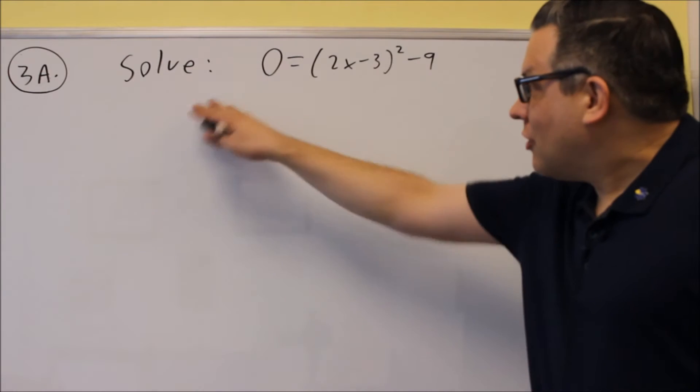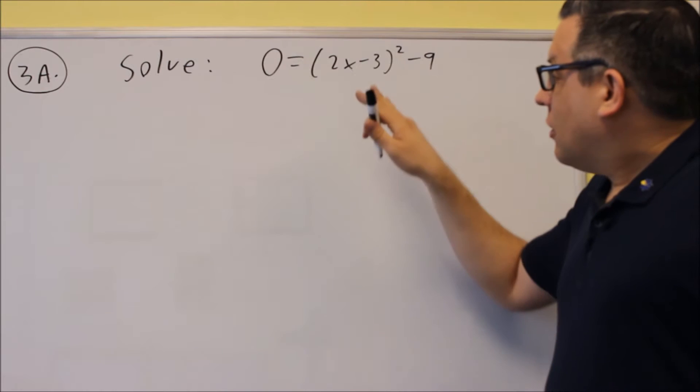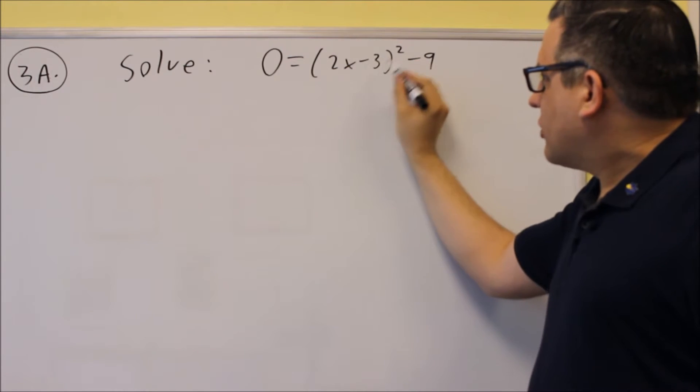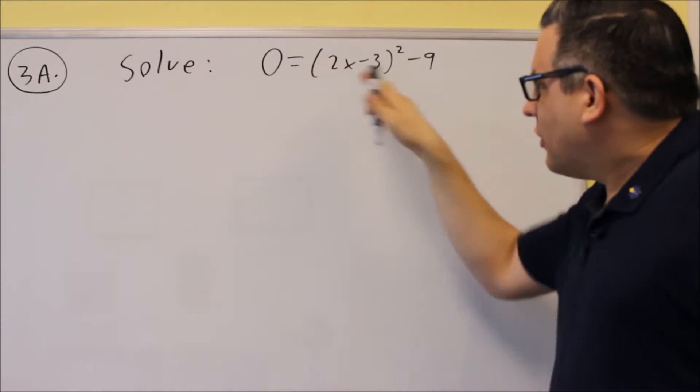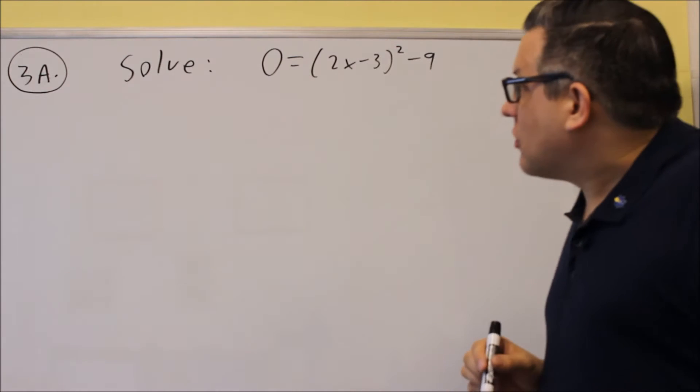For problem 3a, it says solve, and you can use any method you want. Here's another one where we have something in parentheses with a square in it. So anytime you see that, you want to use the square root property in order to solve that.